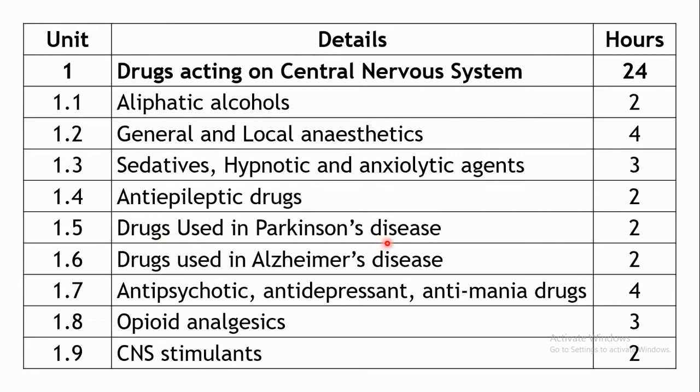The next chapter covers drugs used in Parkinson's disease, which is associated with rigidity, abnormal posture, gait, and affected movement. Drugs used in the treatment include levodopa as first-line treatment, along with other important drugs. Two hours are allotted for this chapter.